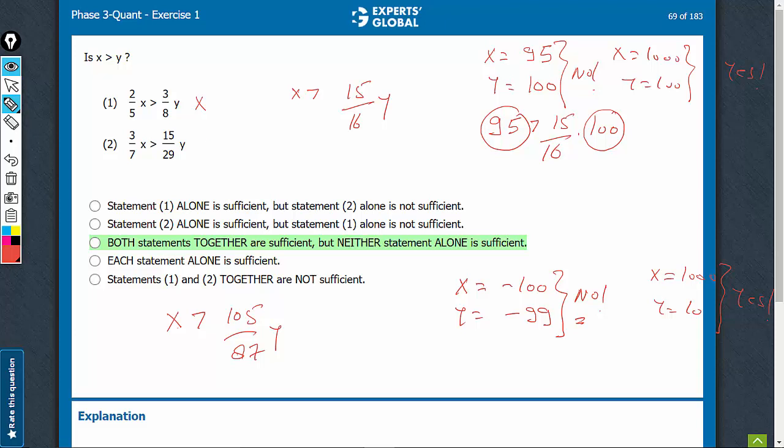Now let's combine and check. Imagine if y were something positive, then in this case by multiplying y with 105 and 87, you have increased the value of y and still x is greater. And if y were something negative, such as this one, then by multiplying y by 15 upon 16, you have increased the value.